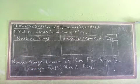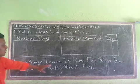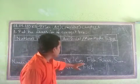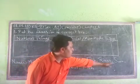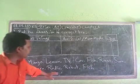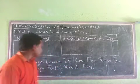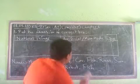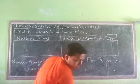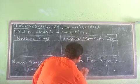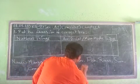Now let's read all the words clearly. The first one is mango, second is lemon, third is TV, then comes car, fish, river, sun, camera, radio, robot, and moon.